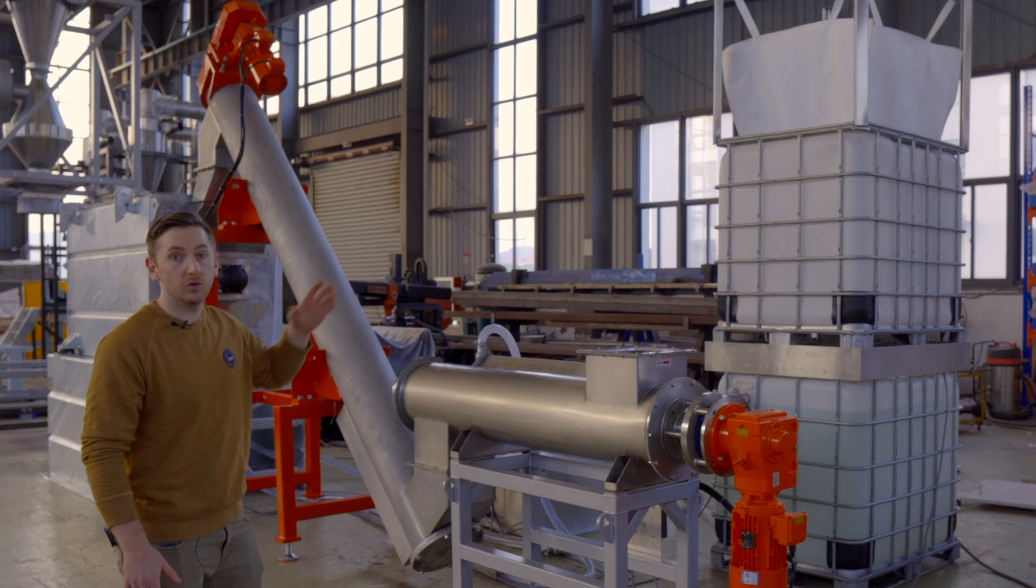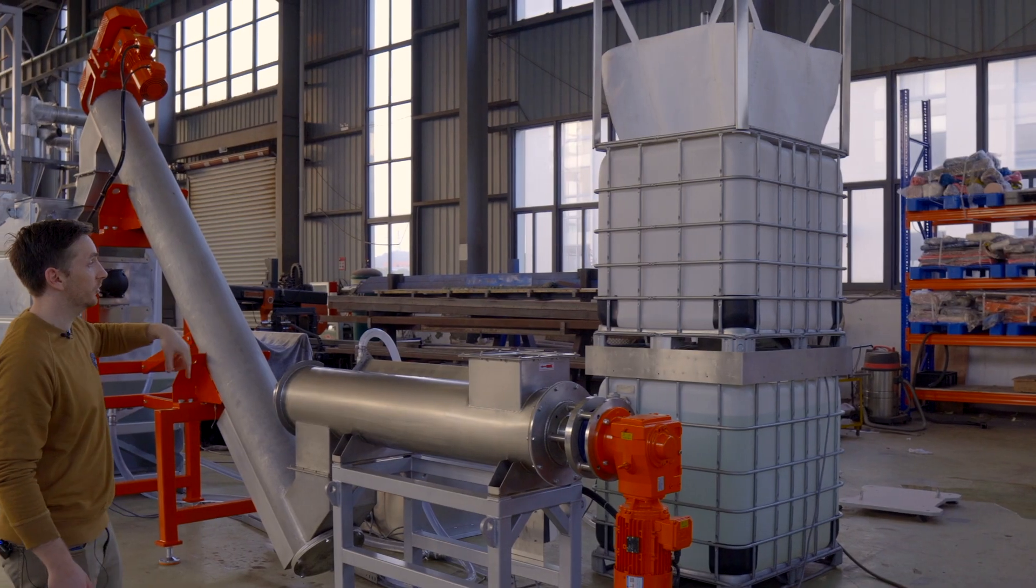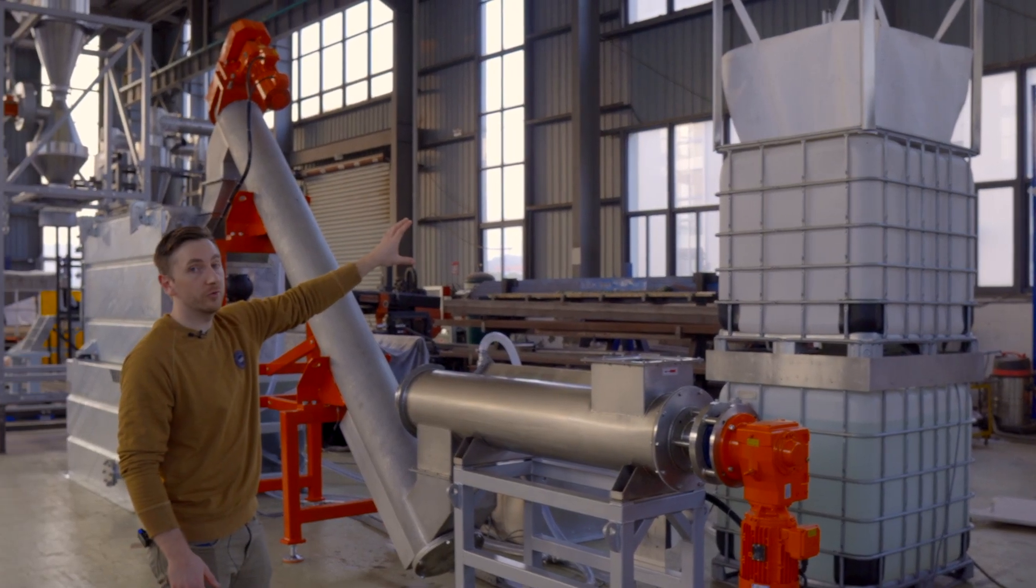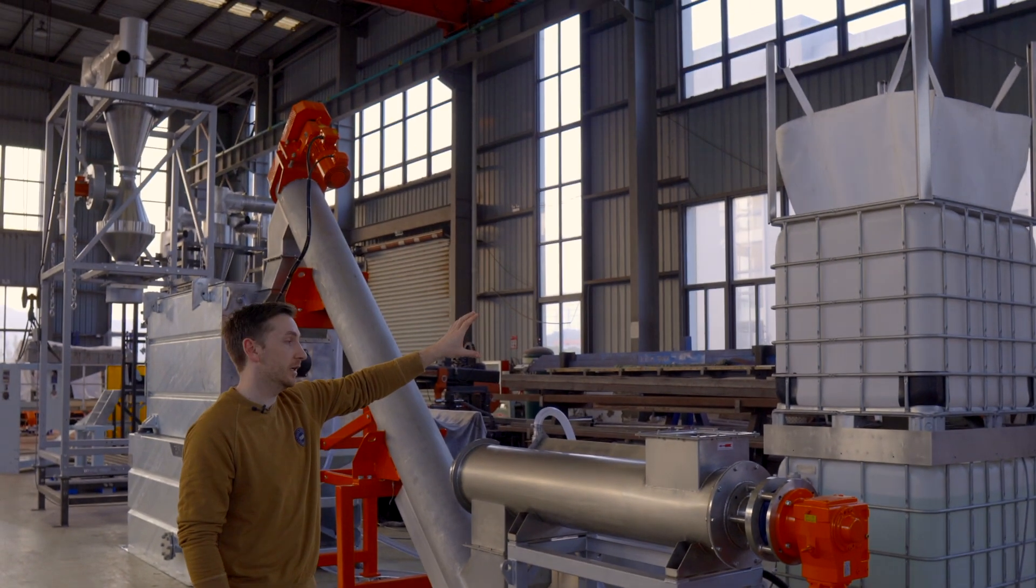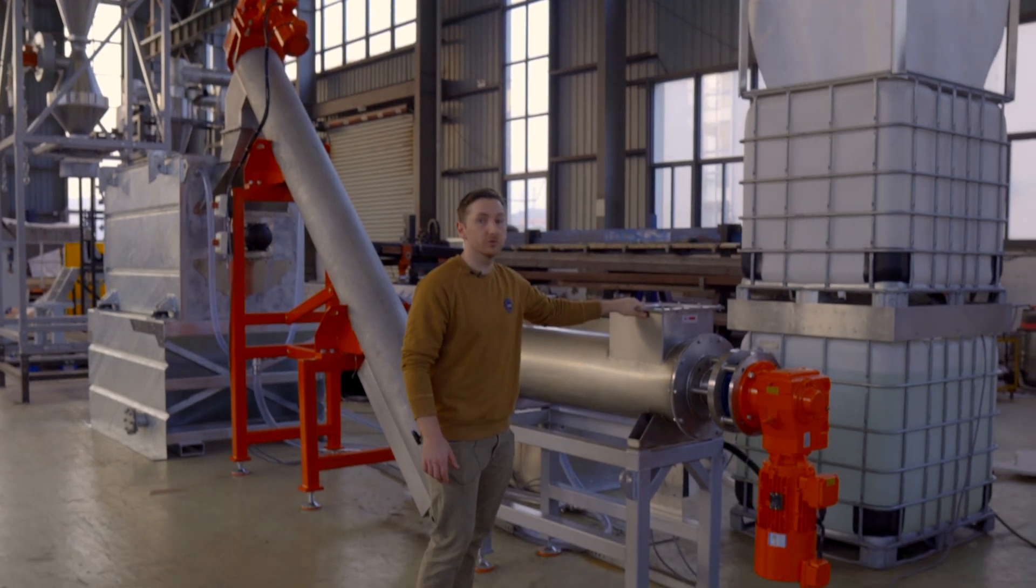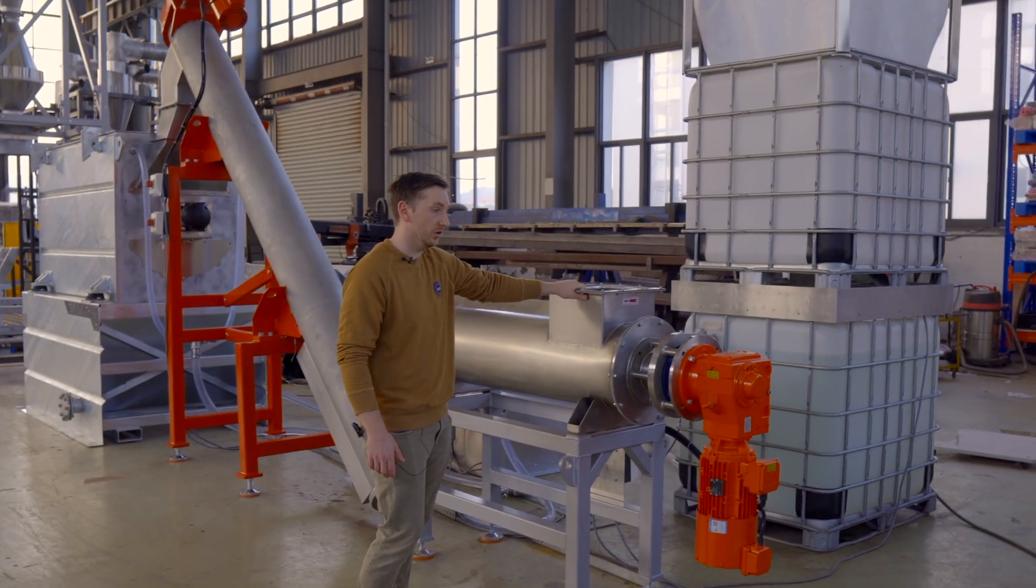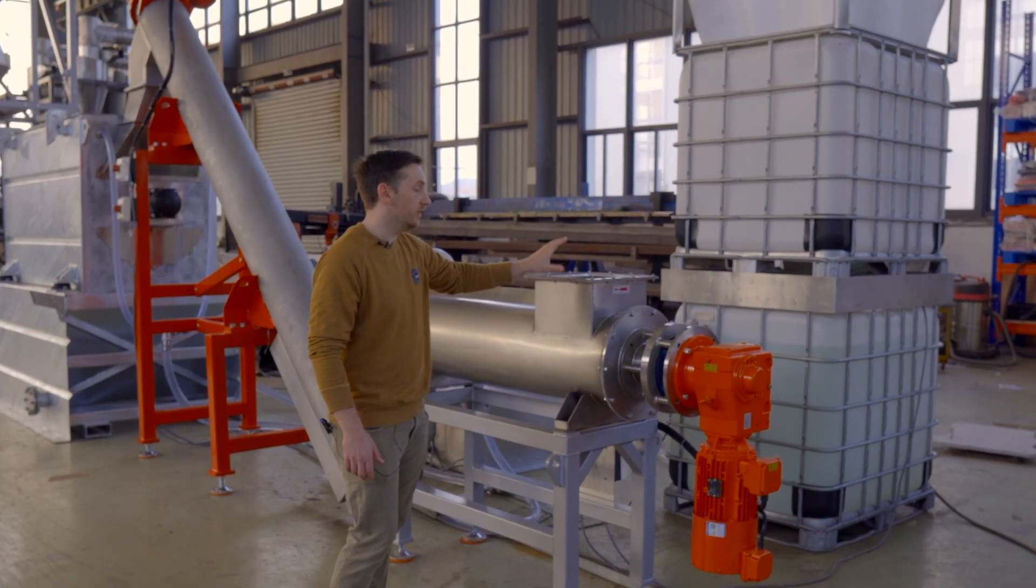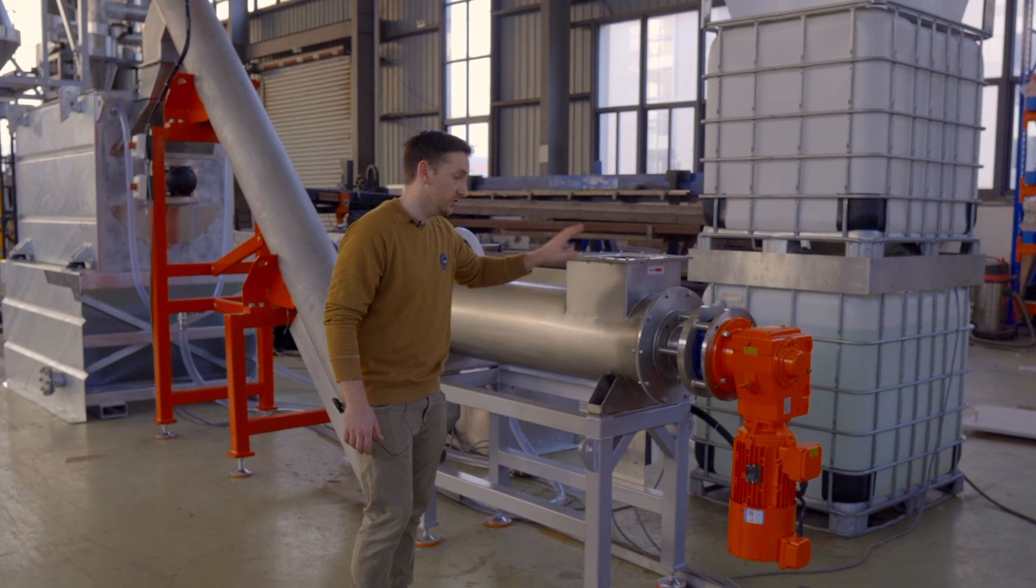We've got it set up in these IBC tanks here. At the front of the line is a horizontal friction washer, just a custom unit that we've designed. This will be fed by a little wash granulator.